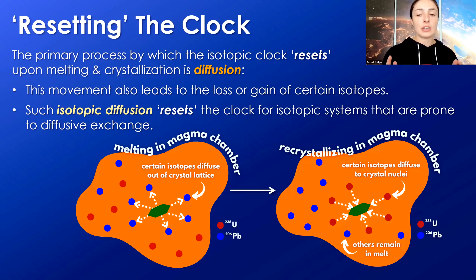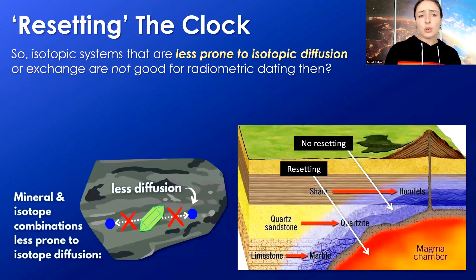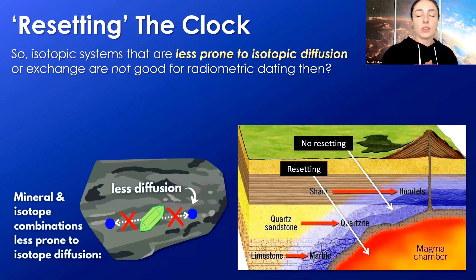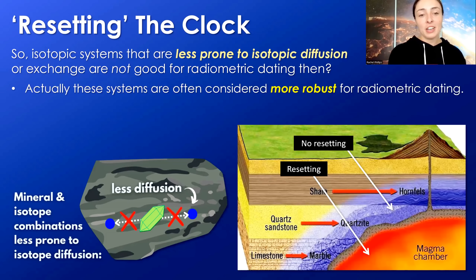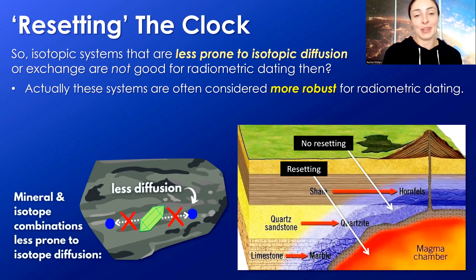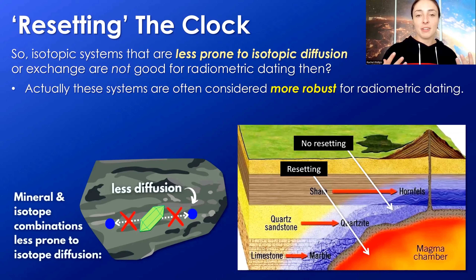This is for reasons I'll talk about later in the video, which is incompatible versus compatible elements in crystal structures — it's largely due to the crystal lattice and how it's structured and what ionic sizes it likes to fit versus which ones it doesn't. This type of mechanism — isotopic diffusion — resets the clock for isotopic systems that are prone to diffusive exchange. So you might think isotopic systems less prone to diffusive exchange are not good for radiometric dating — but actually, that's not the case.